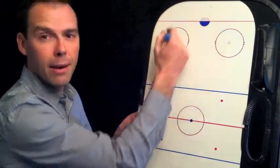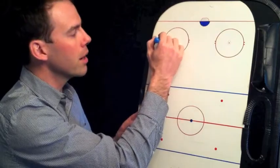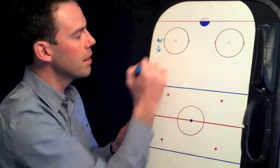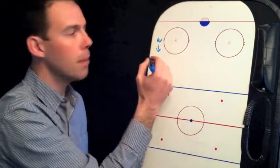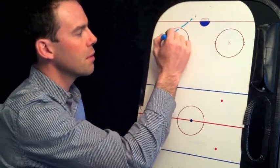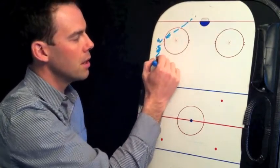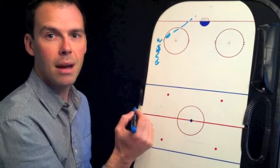So if you're breaking out of this zone and you're the winger, you want to have your feet and face pointing up ice. So as soon as you receive the pass from your defenseman, you can begin skating. And that's up ice.